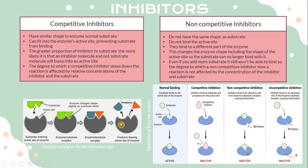This diagram shows the competitive inhibitor binding to the active site of the enzyme — the competitive inhibitor is similar to the normal substrate. For the non-competitive inhibitor, they do not have the same shape as the substrate. The inhibitor binds to a different site on the enzyme, causing inactivation. The substrate is not equivalent to the active site, so the non-competitive inhibitor does not bind the active site — it binds to a different part of the enzyme. This changes the enzyme's shape, including the shape of the active site, so the substrate can no longer bind with it. Even if more substrate is added, it still won't be able to bind. Therefore, the degree to which a non-competitive inhibitor slows a reaction is not affected by the relative concentration of inhibitor and substrate.